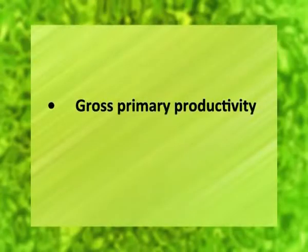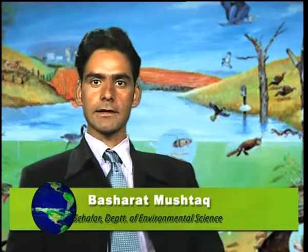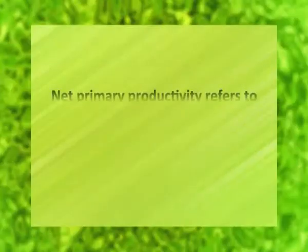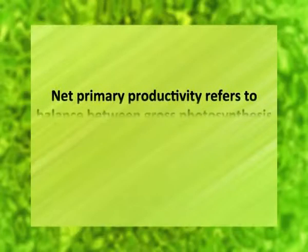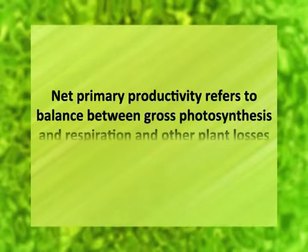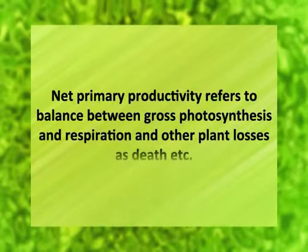Primary productivity is further distinguished as gross primary productivity and net primary productivity. Gross primary productivity, or GPP, is the rate of storage of organic matter in plant tissue in excess of respiratory utilization by plants during the measurement period. Net primary productivity refers to the balance between gross photosynthesis and respiration, and other plant losses such as death, etc.